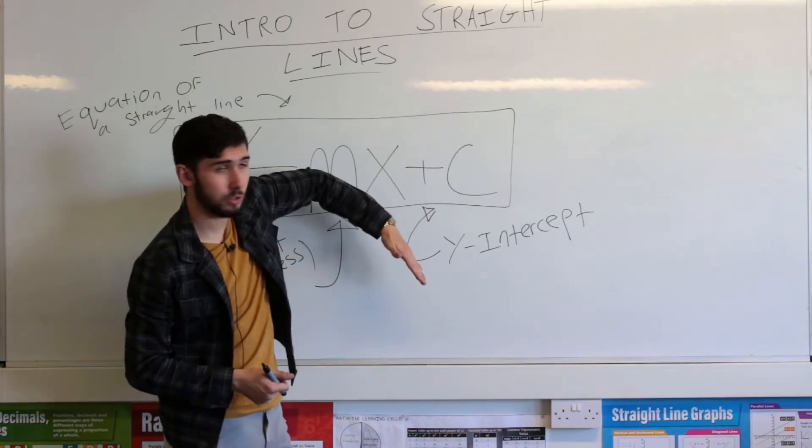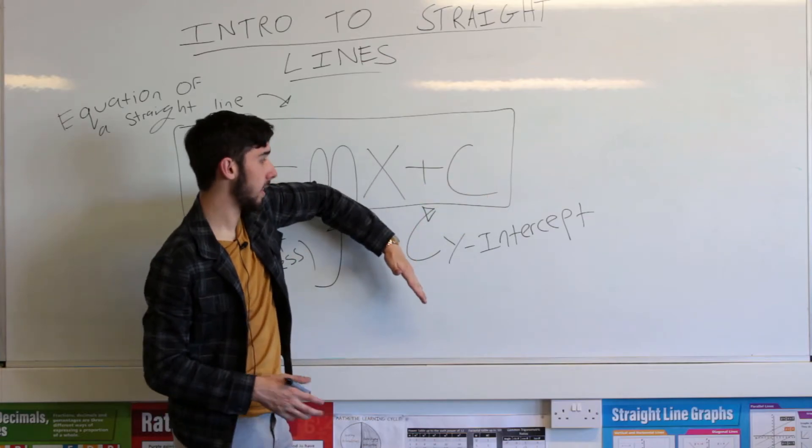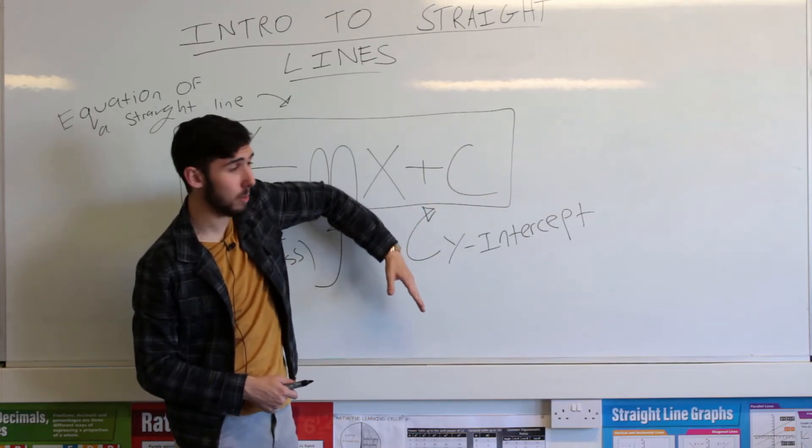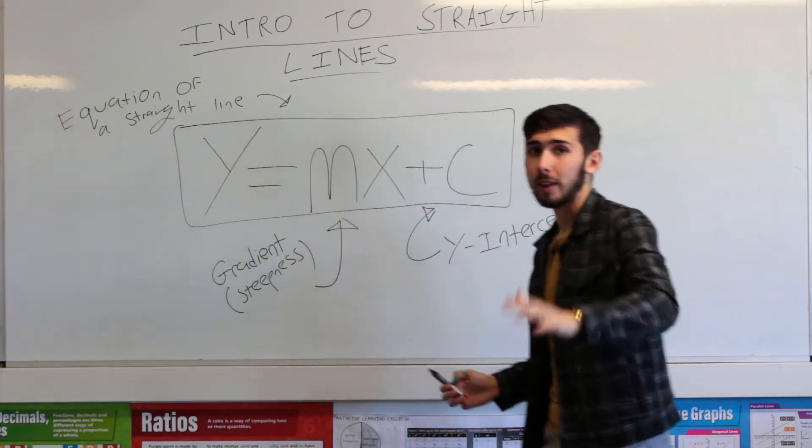Now, a negative gradient will go downwards. So a gradient of zero, a gradient of negative one is a 45 degree angle still, but going downwards, and so on and so forth. Again, we're going to talk about that soon.